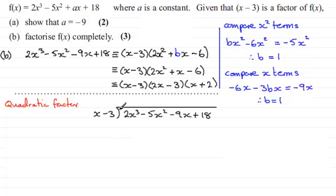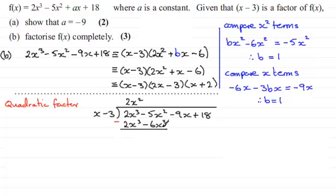Assuming you're familiar with algebraic long division — if not, do check my website. We ask: what do we multiply x by to give 2x cubed? It's 2x squared. Multiply 2x squared by x minus 3 to get 2x cubed minus 6x squared. Subtract: the 2x cubed terms cancel, and minus 5x squared minus minus 6x squared gives x squared. Bring down the next term, minus 9x. Now what do we multiply x by to get x squared? That's plus x.